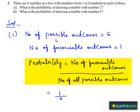Therefore, the probability of drawing a marble with number 2 is equal to 1 by 6.